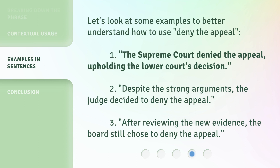Let's look at some examples to better understand how to use 'deny the appeal.' 1. The Supreme Court denied the appeal, upholding the lower court's decision. 2. Despite the strong arguments, the judge decided to deny the appeal. 3. After reviewing the new evidence, the board still chose to deny the appeal.